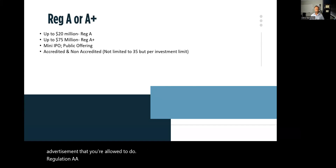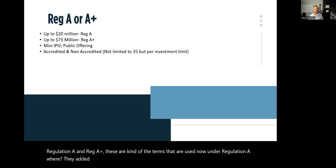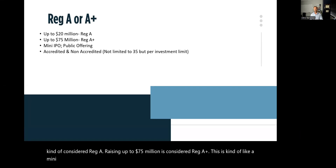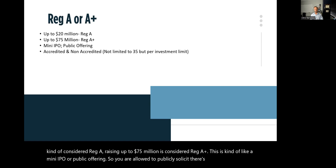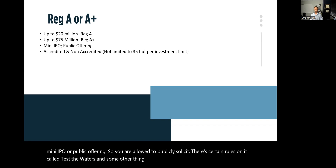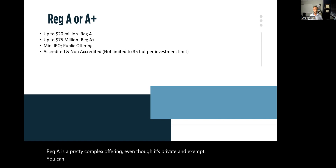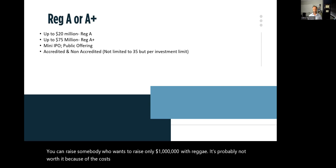Regulation A and Reg A Plus refer to the two tiers now under Regulation A. Tier one allows raising up to $20 million — considered Reg A — while raising up to $75 million is considered Reg A Plus. This is kind of like a mini IPO or public offering. Public solicitation is allowed, with certain rules including a 'test the waters' provision. However, Reg A is a pretty complex offering, and for someone wanting to raise only $1 million, it's probably not worth it due to the legal costs involved.